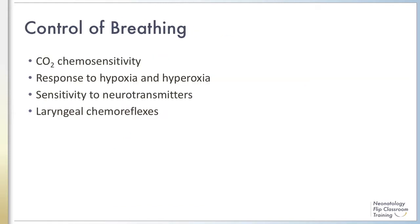The control of breathing in preterm and term neonates will be discussed in four parts. Each section will contain the control of breathing mechanism and a discussion of pathophysiology which leads to apnea in preterm neonates. The control of breathing in both the preterm and term neonate is immature in almost every single aspect of respiratory control.